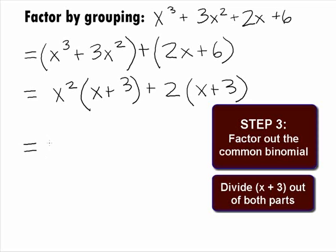In our third step, we want to factor out the common binomial of x plus 3. When we do this, we get our final answer of x plus 3 times x squared plus 2.